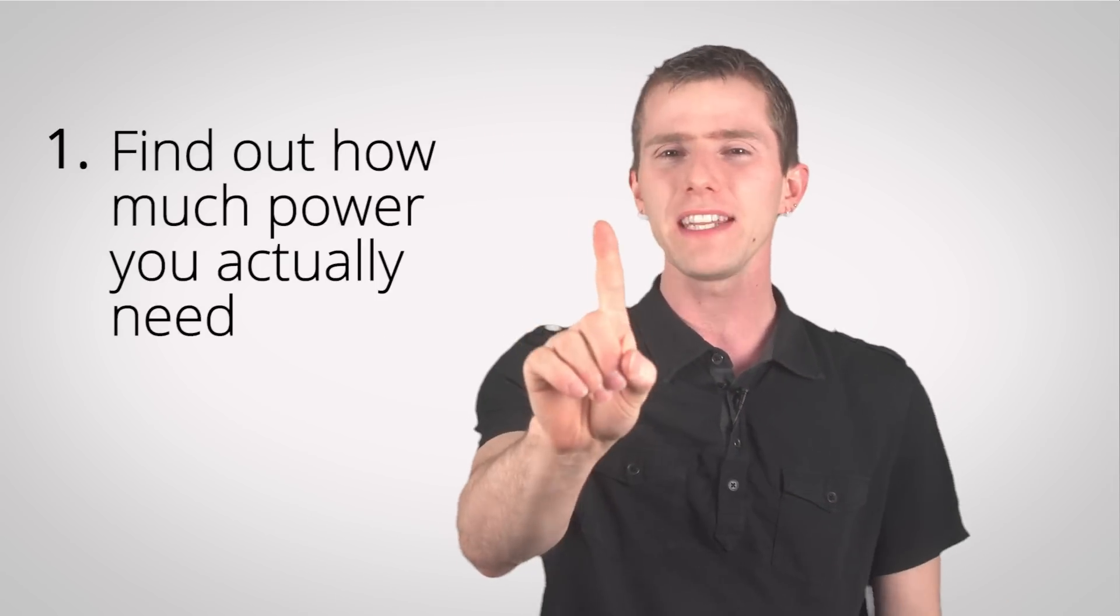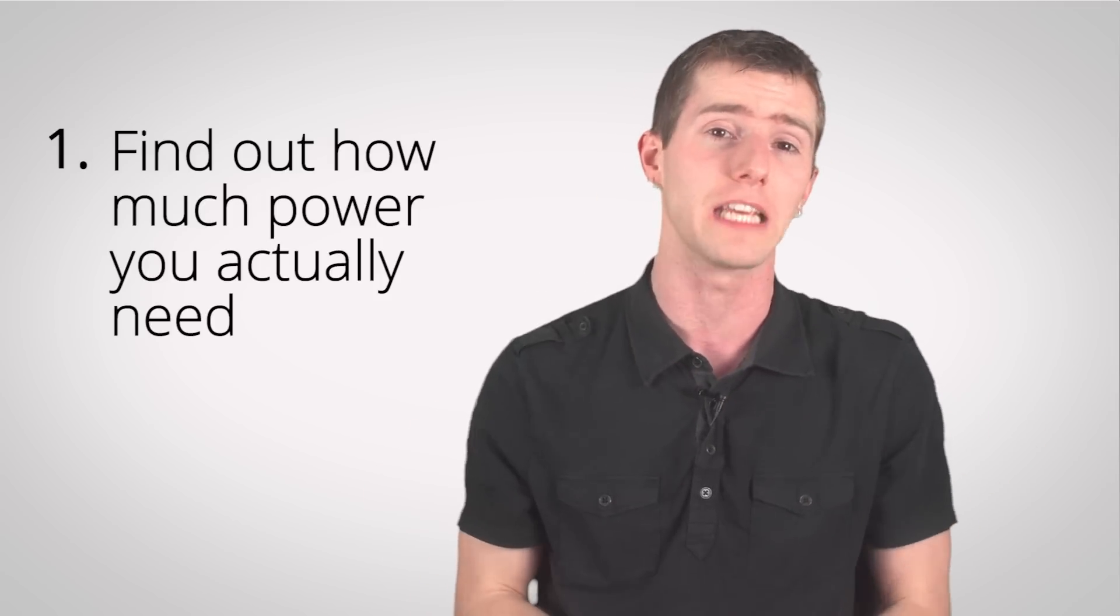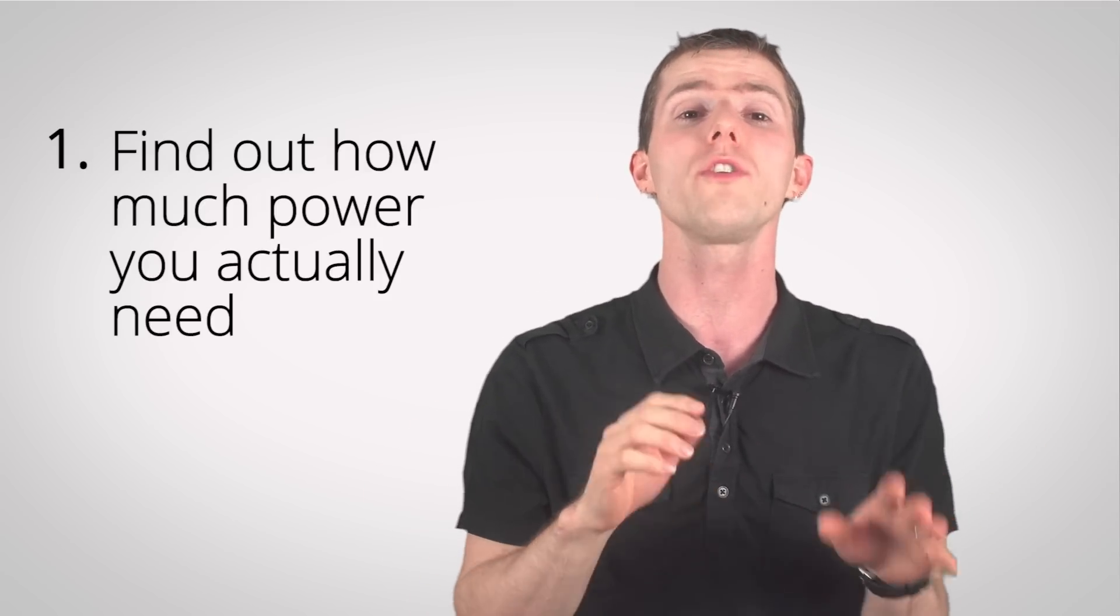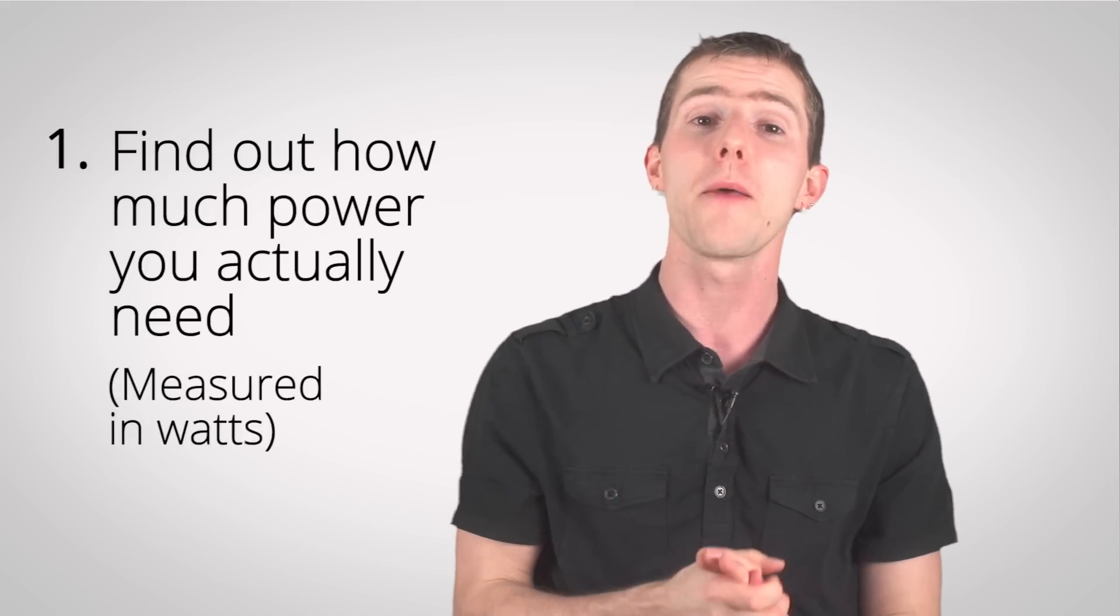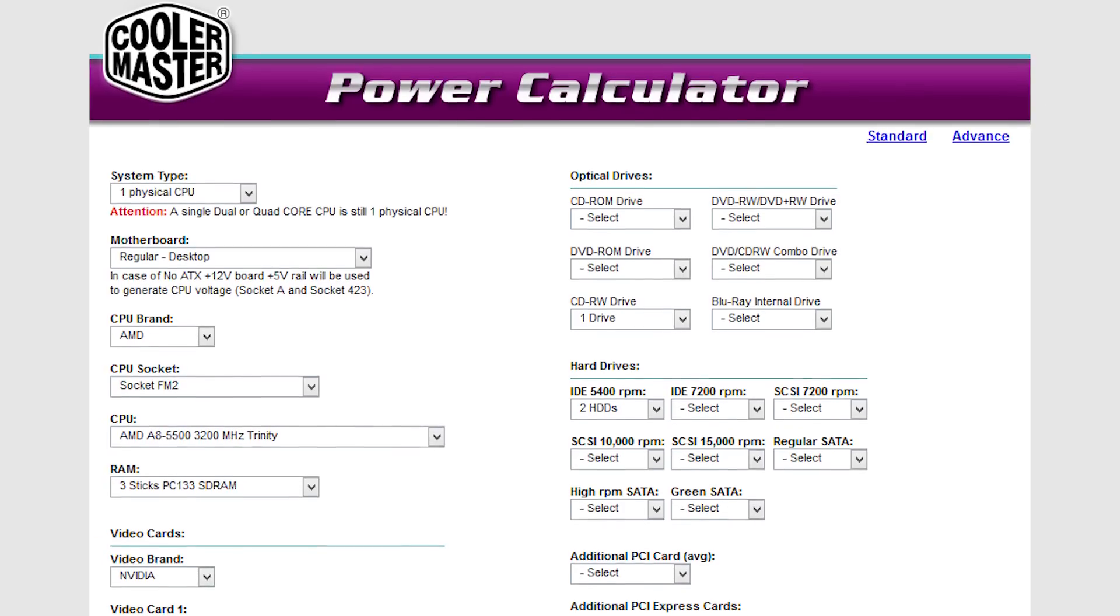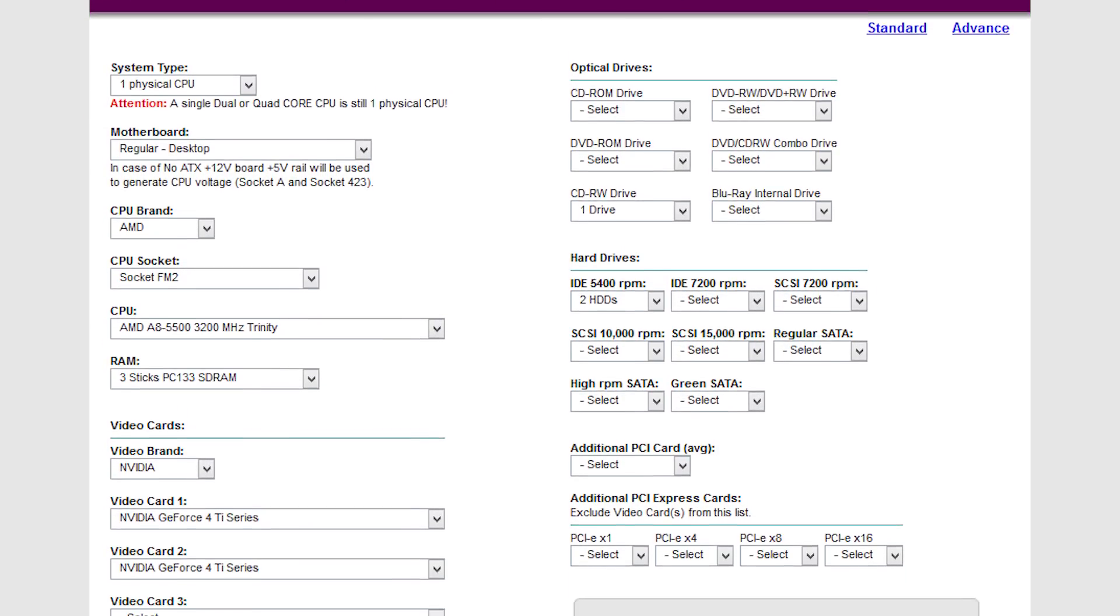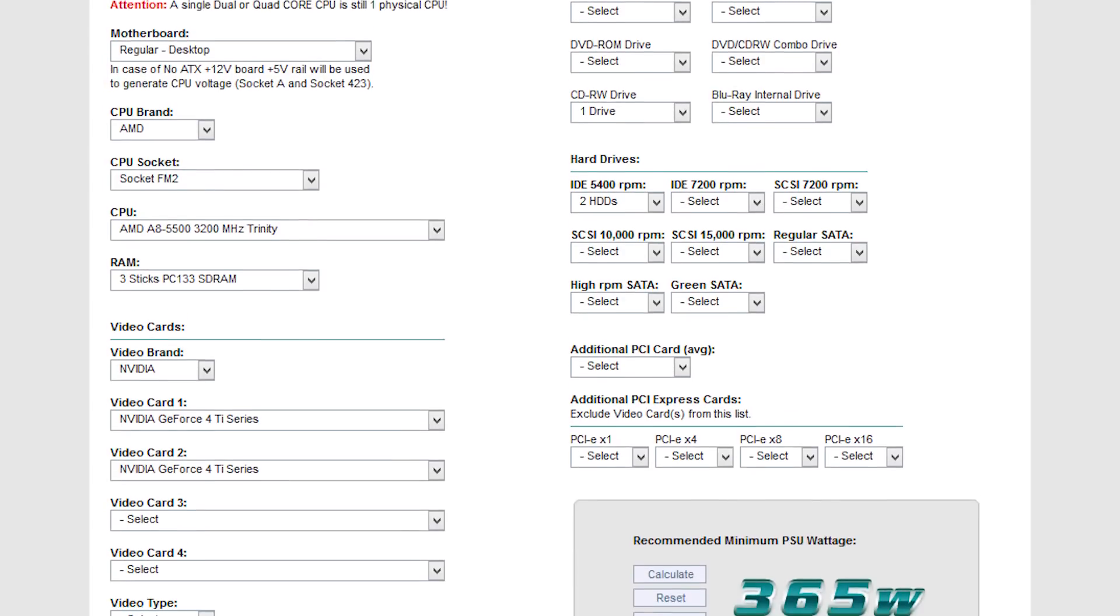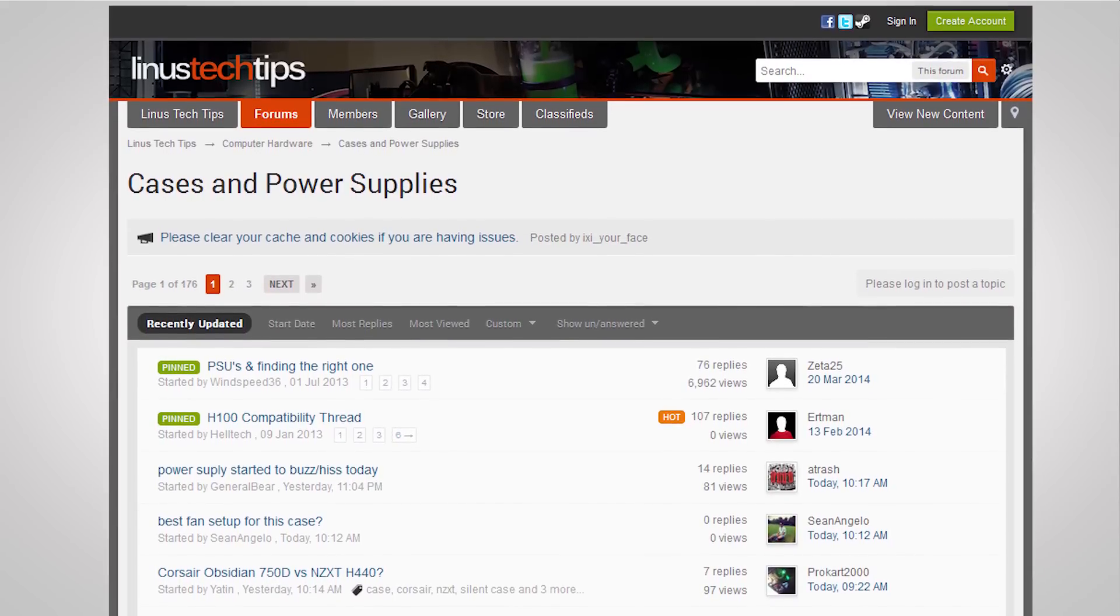Step one is finding out how much power you actually need for the components inside your PC. This is expressed in the total number of watts that the unit is capable of outputting. And the best way to find all that out is to head over to coolermaster.outervision.com. It's linked in the video description, and enter the stuff you're using or plan to use. It's that simple. If you run into anything confusing, just post it in the linus-tech-tips.com forum under power supplies, and our awesome community will help you out.